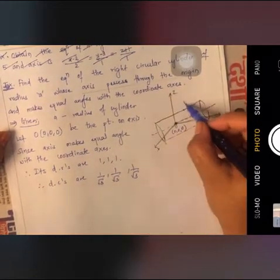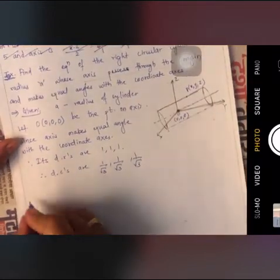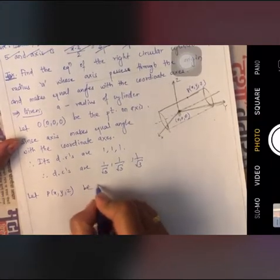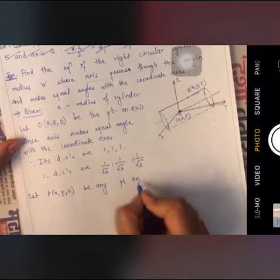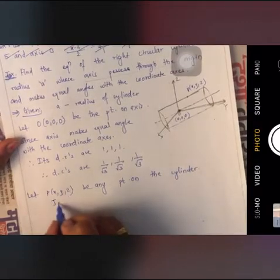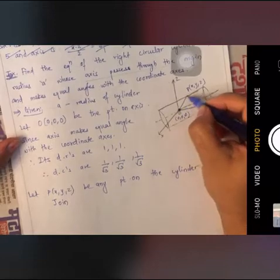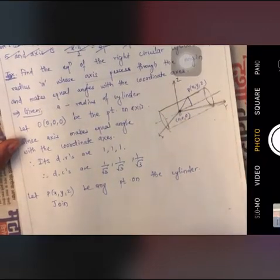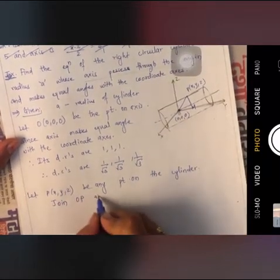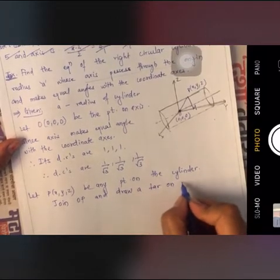Now suppose there is a point P(x, y, z) lying on the cylinder. Let P(x, y, z) be any point on this cylinder. Since the origin is denoted as O, join OP and draw a perpendicular from P onto the axis at point M.